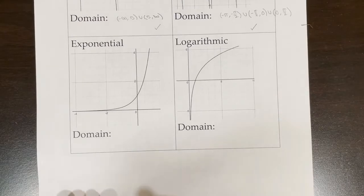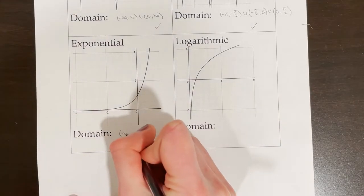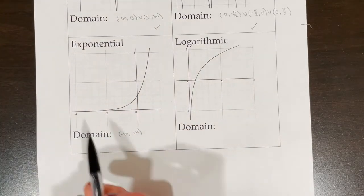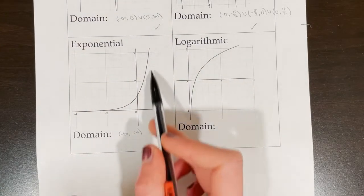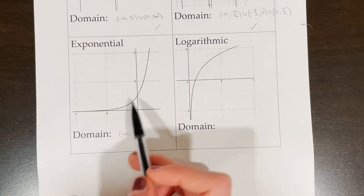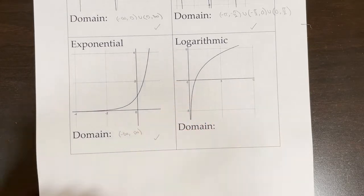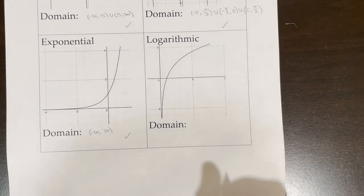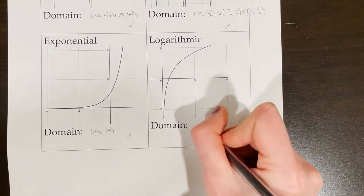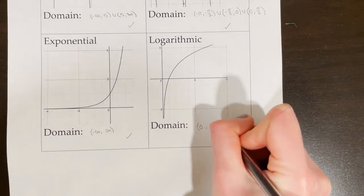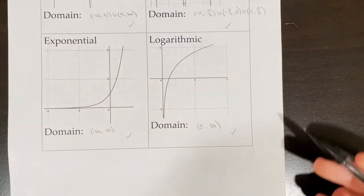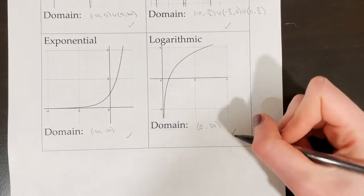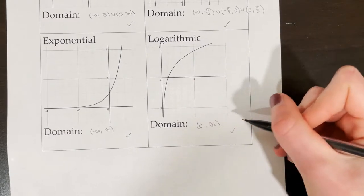For an exponential function, the domain is negative infinity to positive infinity, and the function is continuous at every point on that domain. A logarithmic function's domain is zero to infinity, and it is continuous on this domain, which means it is continuous on that interval.